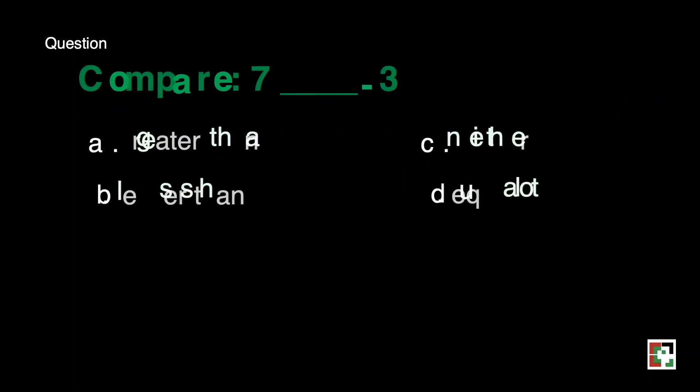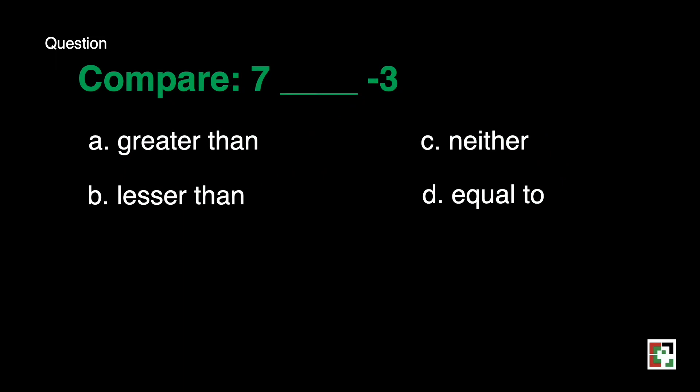Next question. Compare 7 blank negative 3. A, greater than. B, lesser than. C, neither. D, equal to. The answer is greater than. Because whole numbers, positive numbers, and counting numbers are always bigger compared to the negative numbers.